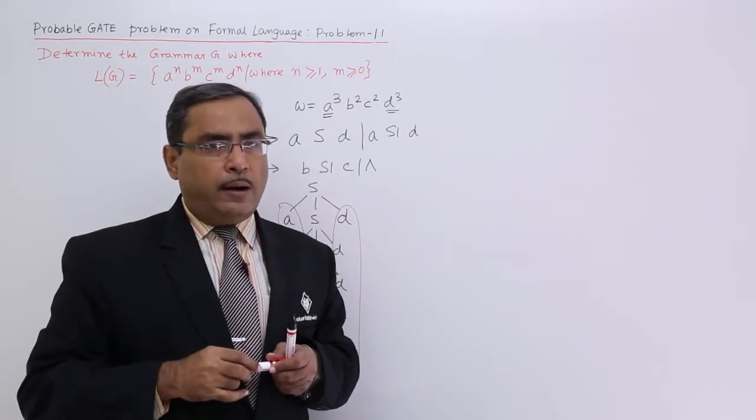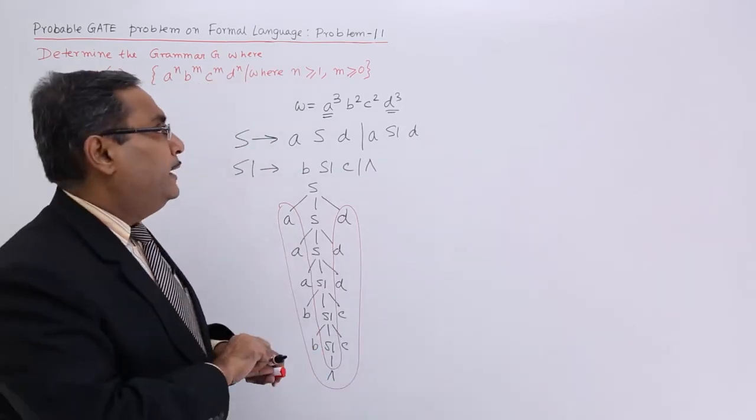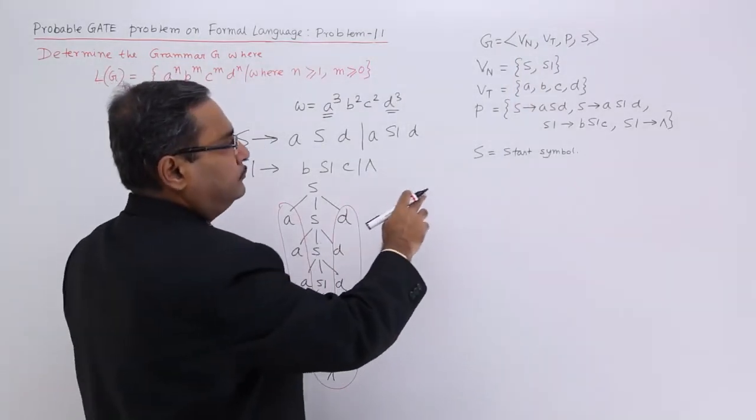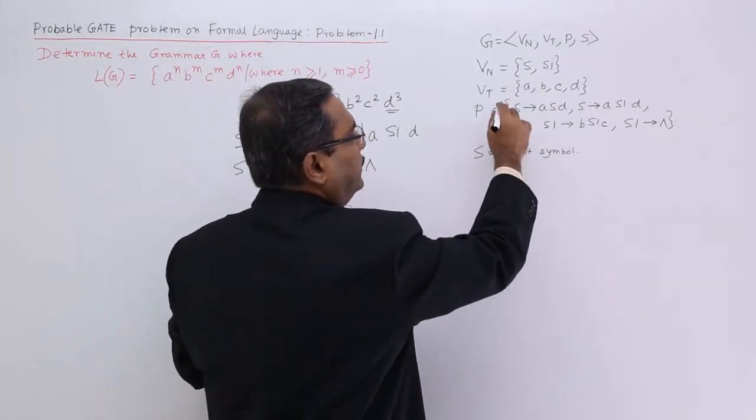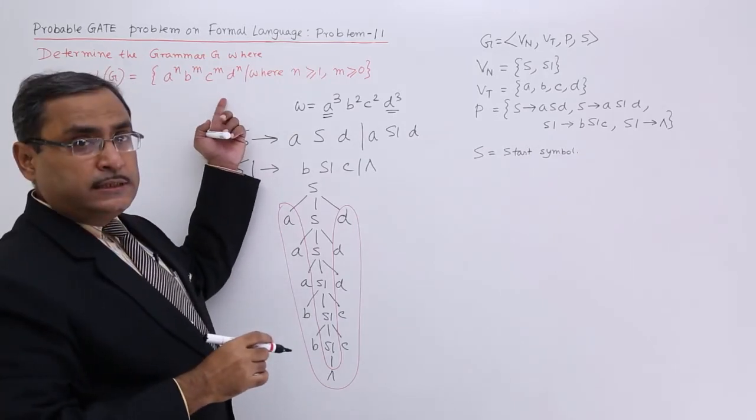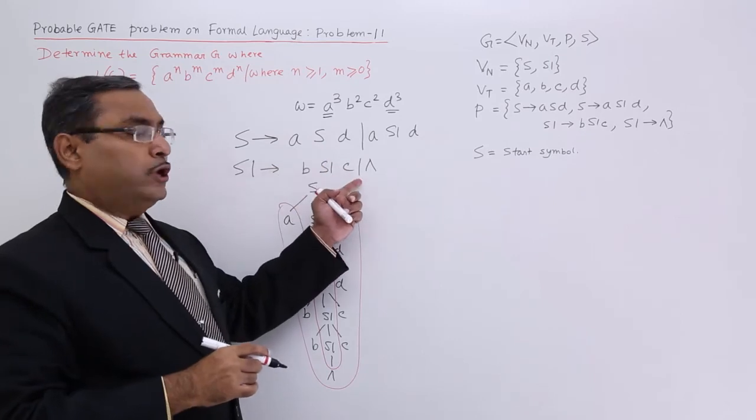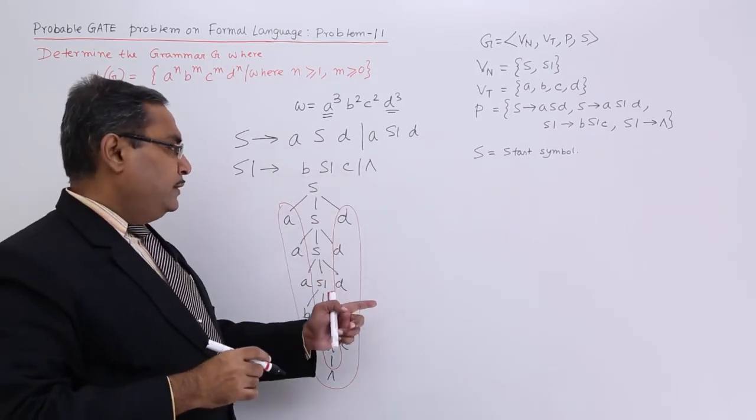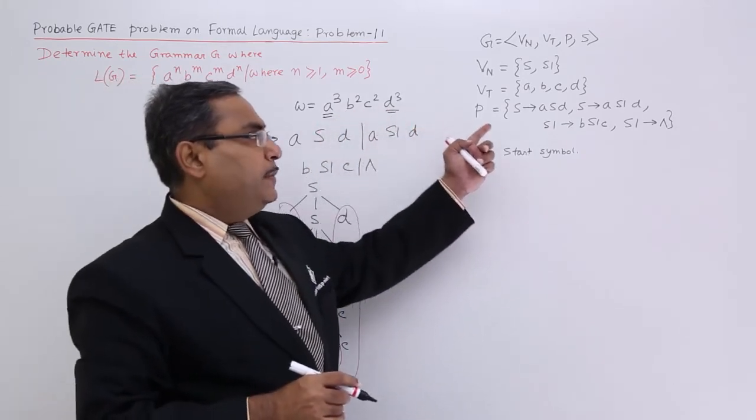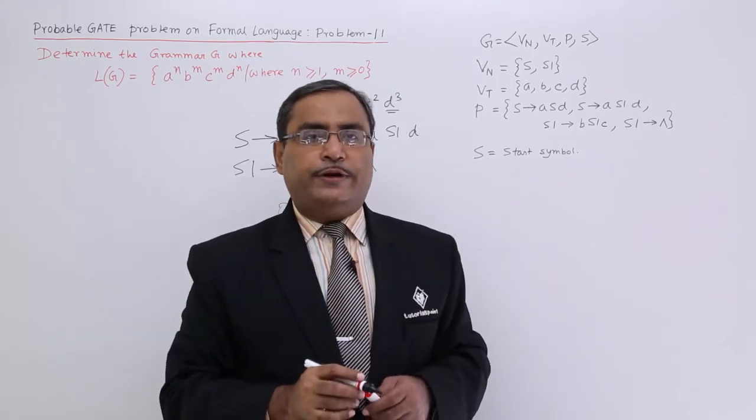In this way the grammar can be designed. Now let me write the grammar now. In this way this particular grammar can be written. So the problem is this. This is my sample sentence. These are respective production rules. This is my parse tree against this particular sample sentence and this is my grammar defined elaborately. I think you are getting the logic. Thanks for watching this video.